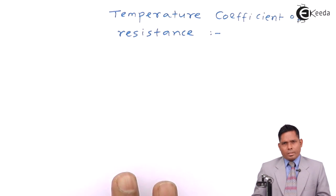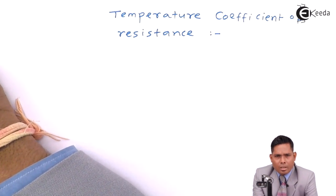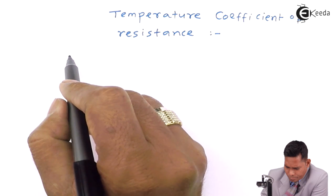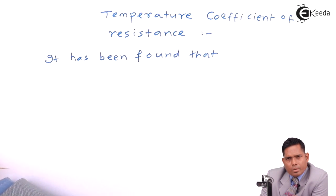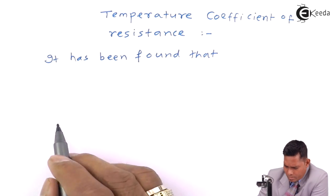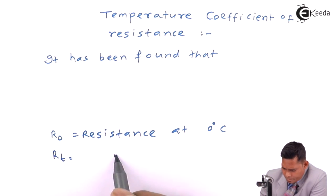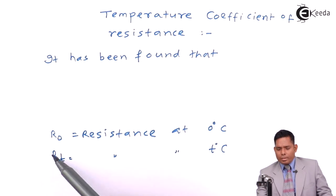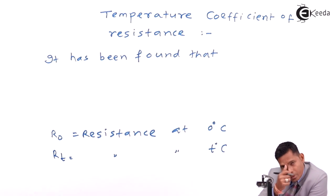So far we know that as you increase the temperature, resistance increases in the case of a conductor. But how they are related numerically is what we are going to discuss — that means how resistance and temperature are related in equation form. It has been found that if R0 is the resistance when the temperature of the conductor is 0 degrees, and Rt represents the resistance at temperature T, then the change in resistance (Rt minus R0) depends on the increase in temperature and the original resistance R0.